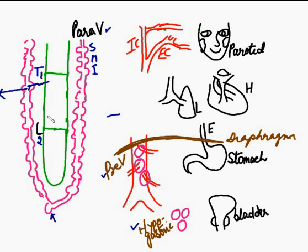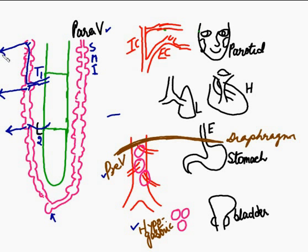From T1 and L2 the same pattern occurs — white rami are only present between T1 and L2. For spinal nerves in the cervical region, the preganglionic fibers come out, travel up, and synapse in the cervical ganglion, then pass out with the cervical nerves. For lumbar and sacral, they travel down, synapse in a ganglion below, and then pass out with the spinal nerves.